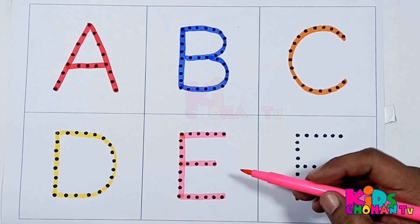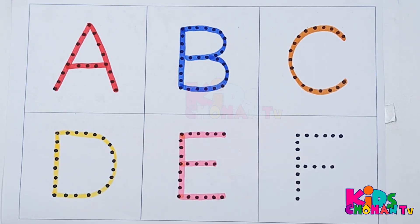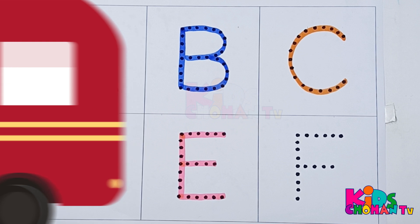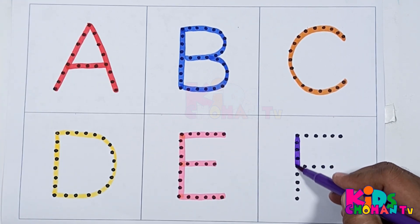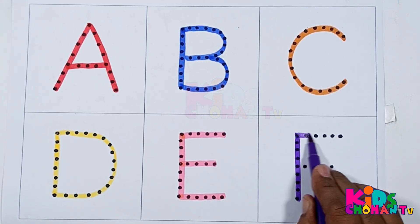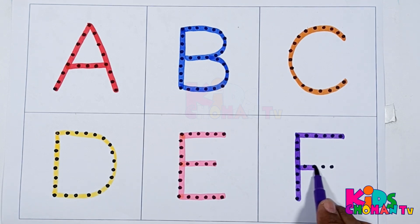E for elephant. Violet color. Kids, this is letter F with violet color. F. F for fish.